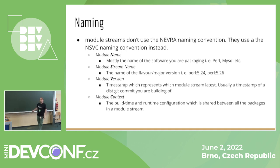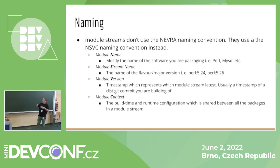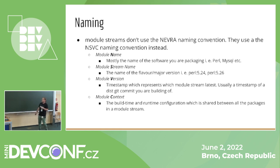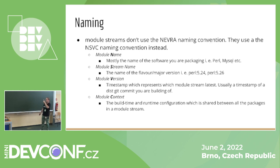Modularity introduced a lot of new nomenclature. Modules and module streams are named differently — they don't use the NEVRA convention. The RPM files inside the module stream still use NEVRA, but the group of those RPM files uses a different naming convention called NSVC — Name, Stream, Version, Context. A module is defined by its name and contains multiple sets of RPM files bundled and built together, each called a stream.